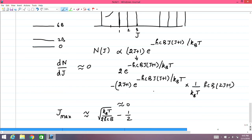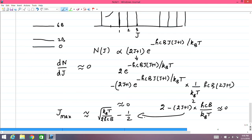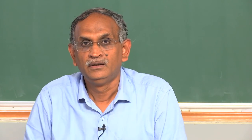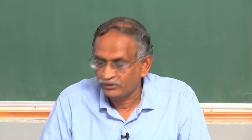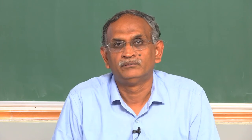Solving this gives J_max ≈ √(k_BT / 2hcB) − 1/2. This is the value of J for which the rotational population — and therefore the microwave intensity — is maximum. Microwave intensities peak at this middle value of J, rather than at J = 0.